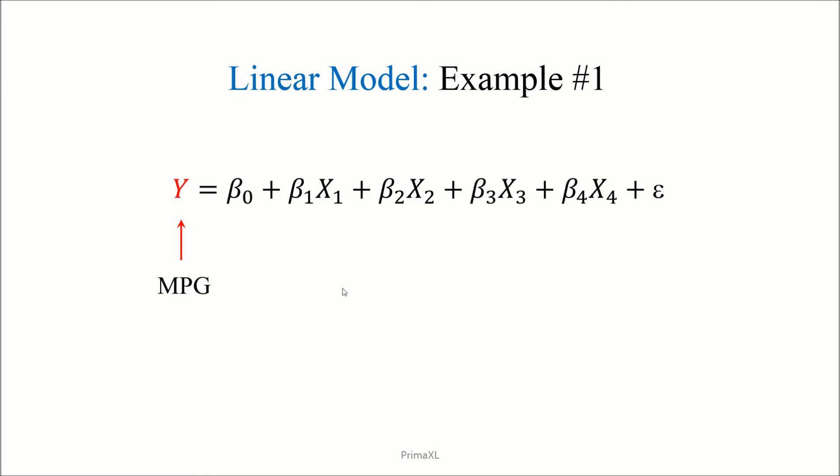Let's suppose a linear model that explains the mileage of a car in terms of the different factors. Here, the dependent variable y is the miles per gallon of a car. Then, the first explanatory variable x1 corresponds to the number of cylinders in the car engine. x2 corresponds to the horsepower of the car. x3 corresponds to the weight of the car.